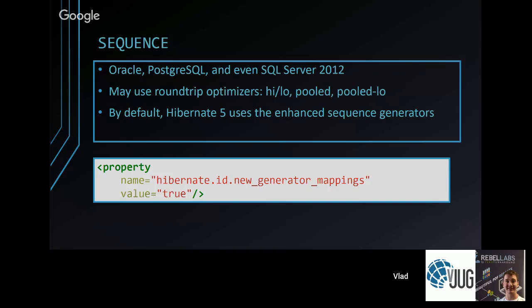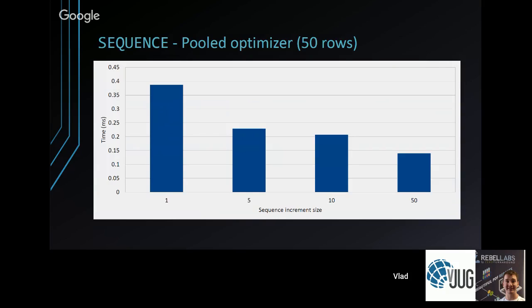SEQUENCE is a much better fit for Hibernate if your database supports it — Oracle, PostgreSQL, and now even SQL Server. Because getting a sequence value requires an extra database round trip, Hibernate offers optimizers to reduce round trips by pre-allocating a range. For Hibernate 3 or 4, you need to activate these optimizers explicitly via a property; in Hibernate 5 they are enabled by default. If you're inserting 50 rows, reducing from 50 round trips down to 10, 5, or even 1 is the goal.